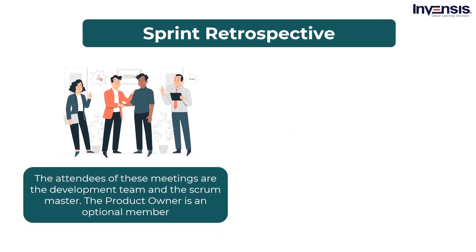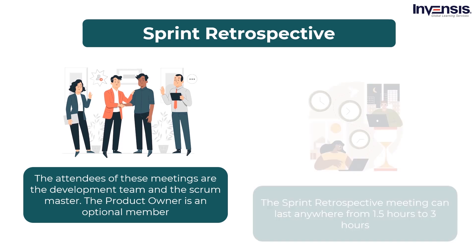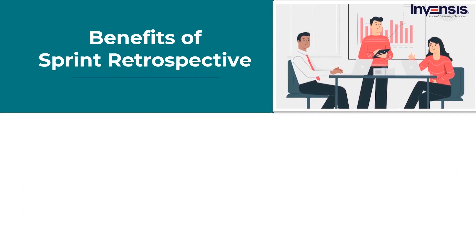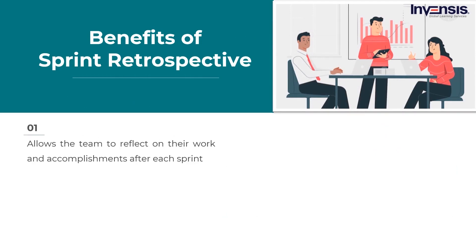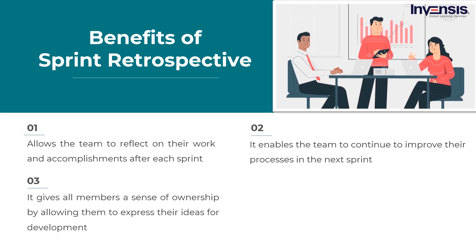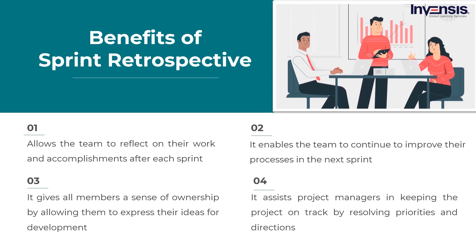The attendees of the Sprint Retrospective are the development team and the Scrum master, with the product owner as an optional member. The Sprint Retrospective meeting can last anywhere from 1.5 hours to 3 hours. Benefits of Sprint Retrospective: it allows the team to reflect on their work and celebrate their accomplishments after each sprint. It enables the team to continue to improve their processes in the next sprint. It gives all members a sense of ownership by allowing them to express their ideas for development. It assists project managers in keeping the project on track by resolving priorities and directions. It aids in the early identification of risk and issue variables and promotes transparency and trust among team members, which strengthens team spirit.